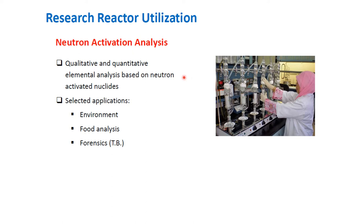Research reactors can also be used in neutron activation analysis, or NAA. NAA is a method for the qualitative and quantitative determination of elements, based on the measurement of characteristic radiation from radionuclides formed directly or indirectly by neutron irradiation of materials. The most suitable source of neutrons for such an application is usually a nuclear research reactor. Next to education and training, neutron activation analysis is the most widely used application of research reactors.